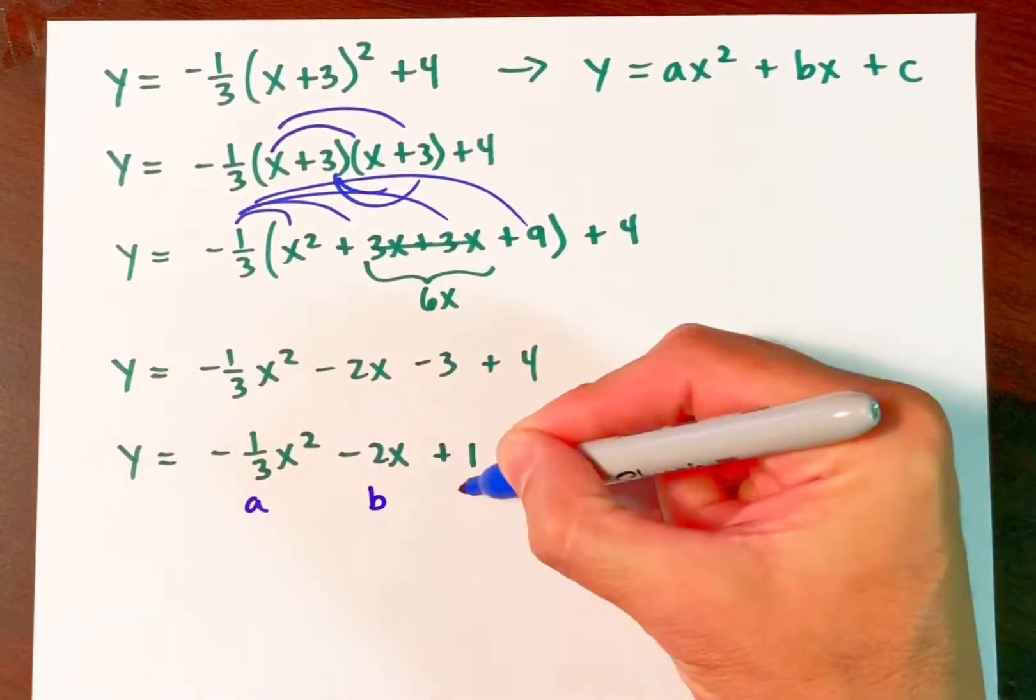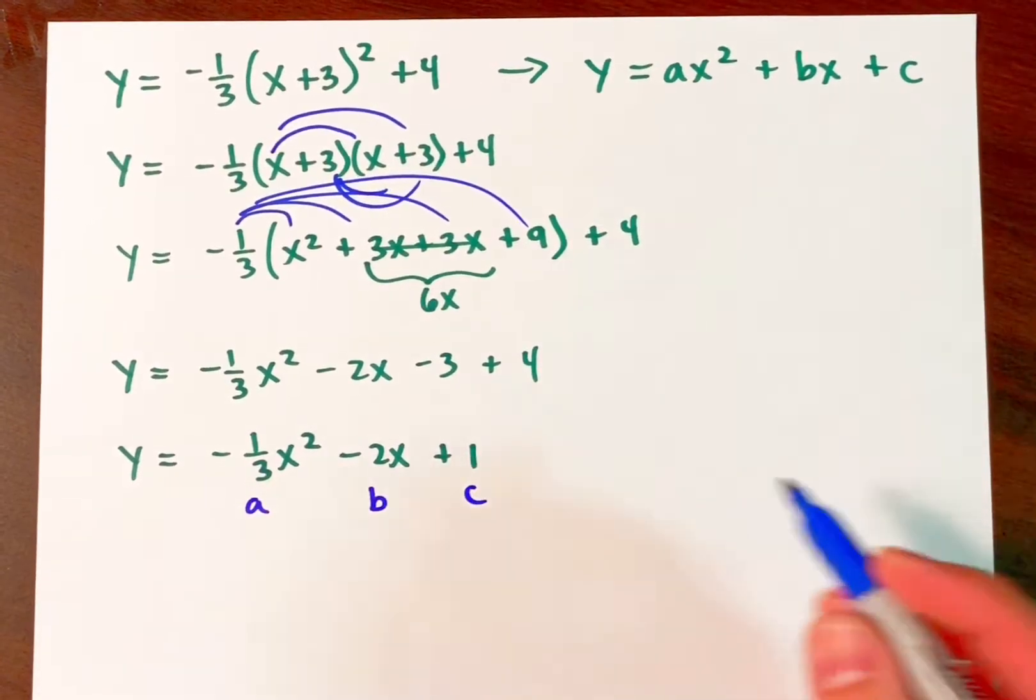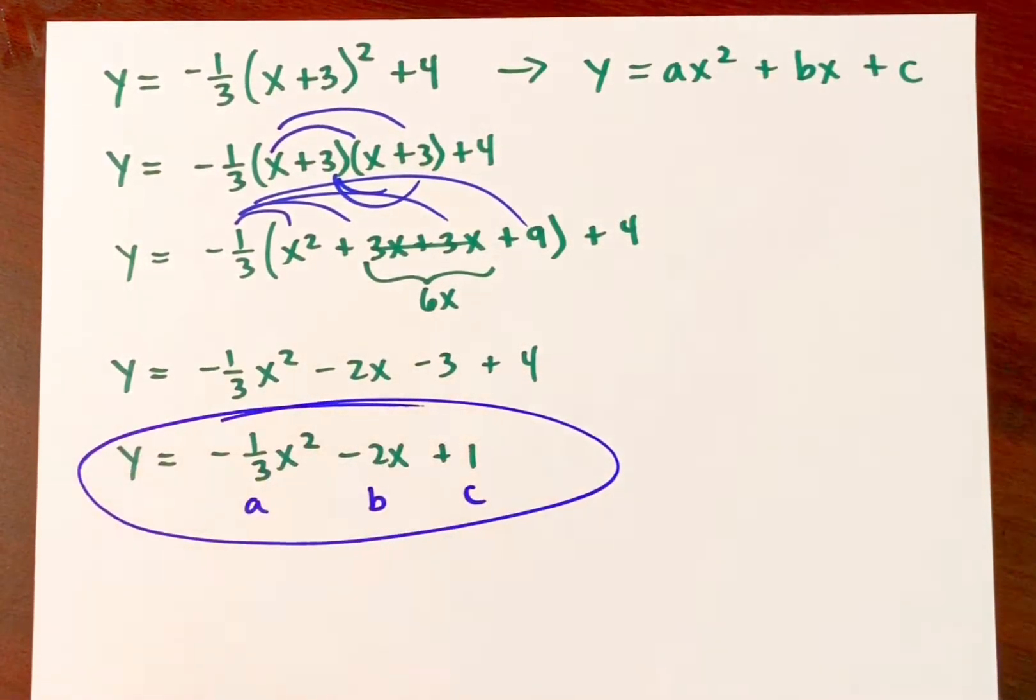a is a negative third, b is negative two, and c is one. So there is your standard form.